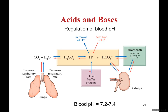Our blood system is designed to have a fixed pH between 7.2 and 7.4. If for some reason the pH goes above 7.4 or below 7.1, we are going to die. How does our blood keep its pH fixed? We have three security systems that watch and control the pH of our blood. I'm going to show you how the pH control is happening in our blood.